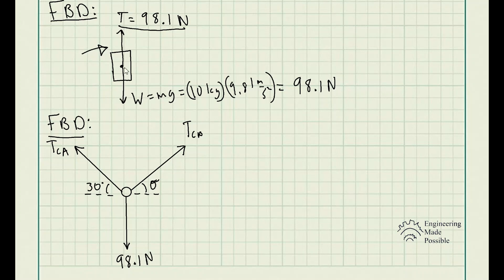That's because for every action there's an equal and opposite reaction. When looking from the perspective of the cylinder, the forces must balance: the weight goes downward and the tension in the cable goes upward because it's holding it up. But when looking from the perspective of the ring, it's holding down the cylinder — the ring is being dragged downwards by that weight. It's all about perspective.